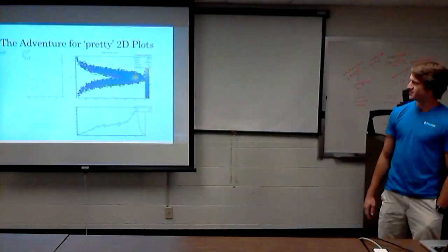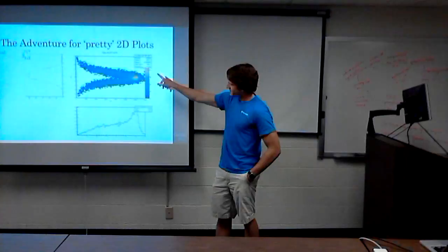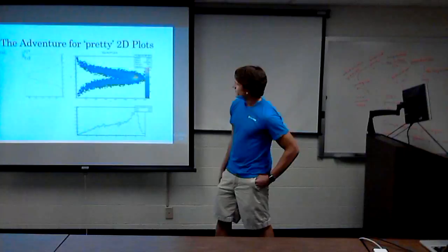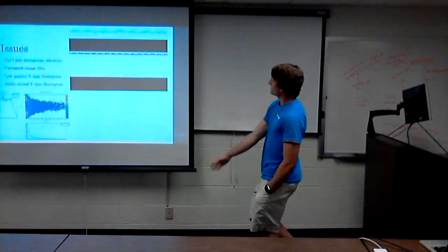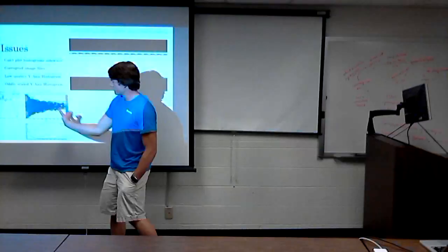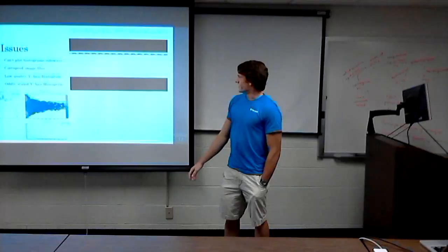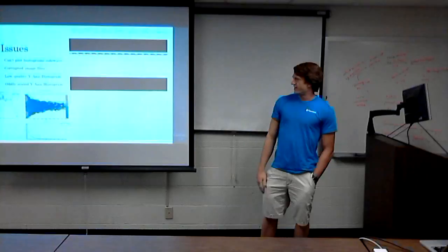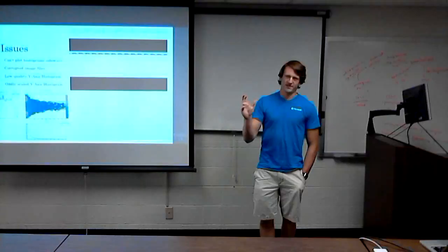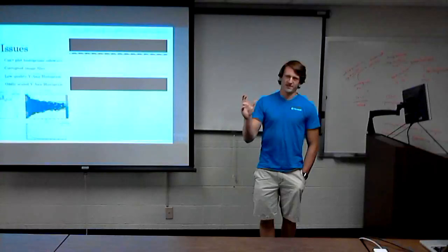The other thing I was doing was this adventure for pretty 2D plots. It's helpful to have the 1D components on either side flipped and scaled correctly. I ran into issues: ROOT doesn't let you plot histograms sideways, so both end up vertical. Completely corrupted image files. Low-quality Y-axis histograms that were blurry and pixelated after flipping. The most annoying issue was scaling—images were either super zoomed in or 10 by 10 pixels, unreadable.